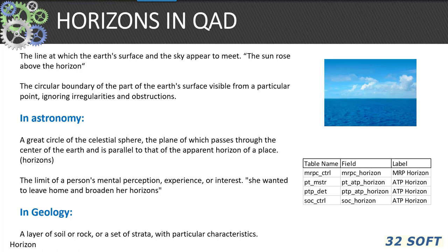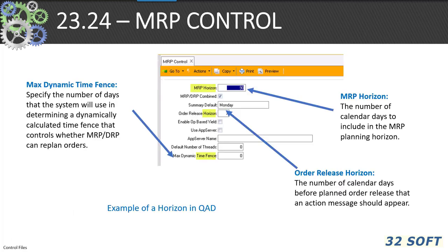In QAD, a horizon normally refers to the extent of a period out into the future. For example, the planning horizon in QAD may be seen in 23.24 MRP control. This defines the number of calendar days to include in the MRP planning process. MRP only processes material requirements within this planning horizon and ignores activities outside of it. You can also see other horizons defined in 23.24, including the order release horizon and the max dynamic time fence horizon.